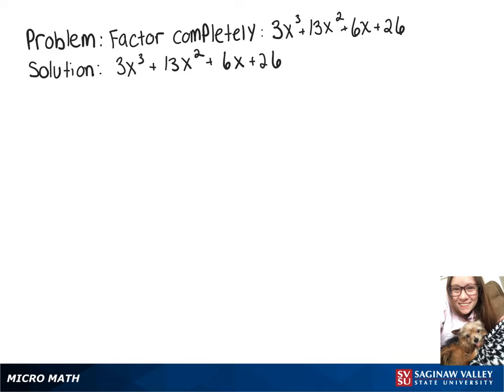We're going to factor 3x³ + 13x² + 6x + 26 by grouping. Splitting that into groups, we'll have (3x³ + 13x²) plus (6x + 26).